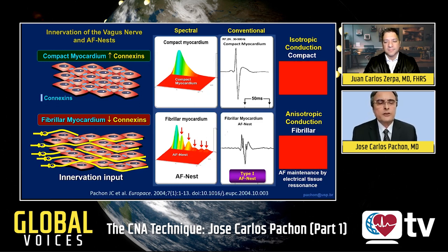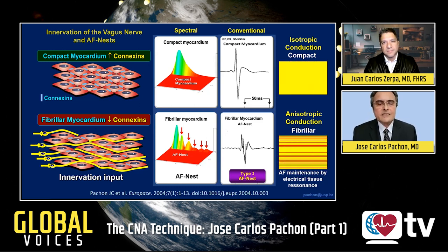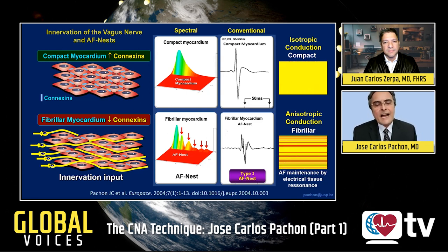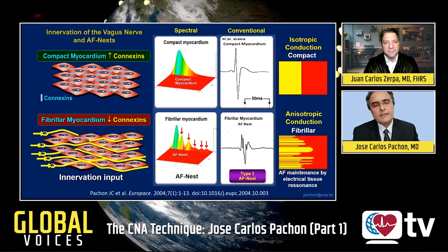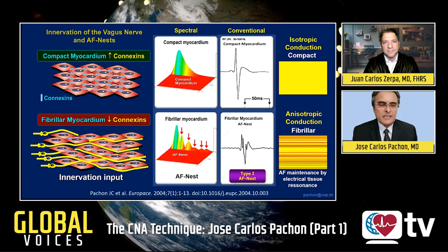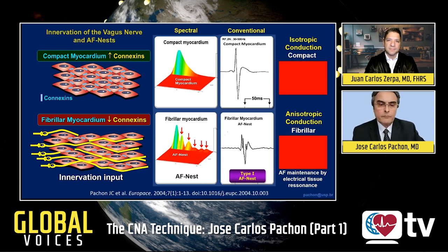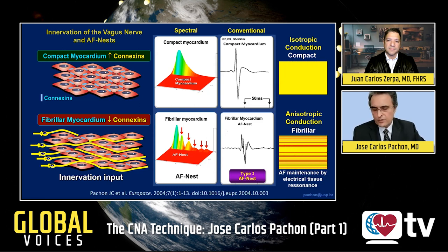We found a lot of atrial fibrillation nests at the insertion of the pulmonary veins, at the insertion of the innervation, and mainly over the areas overlapping the ganglionated plexi. But it is possible to find atrial fibrillation nests and fibrillar myocardium throughout the left and right atrium, and mainly in the interatrial septum.